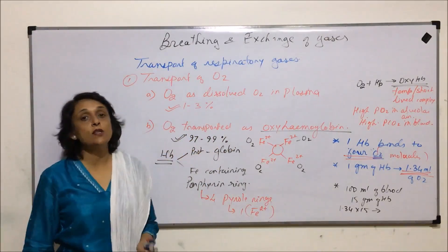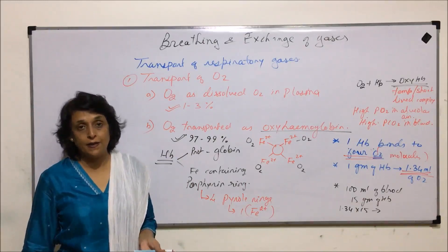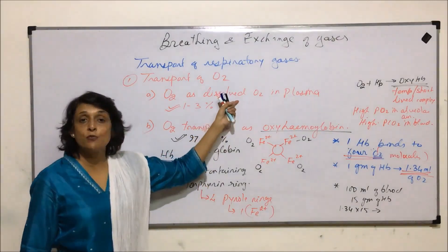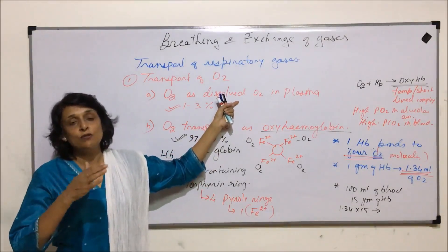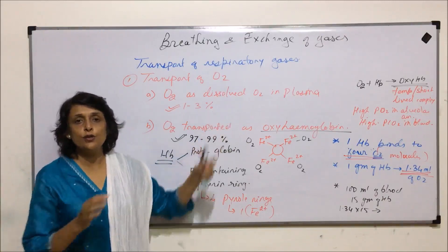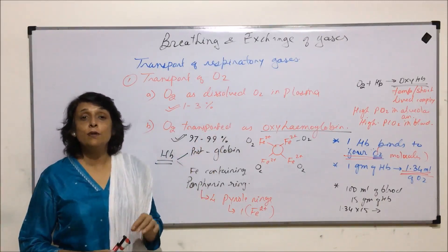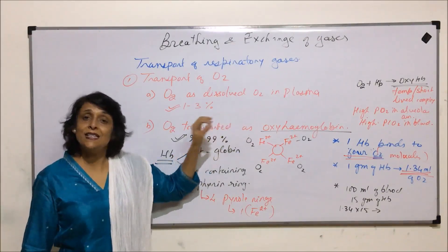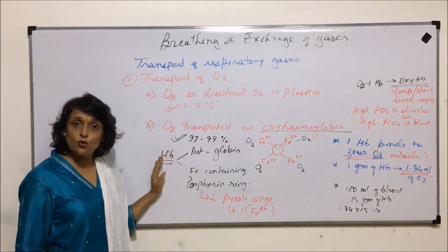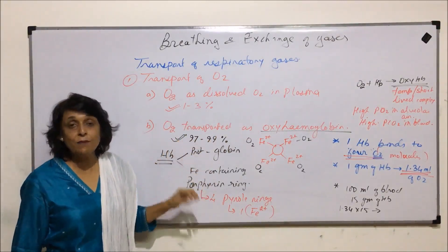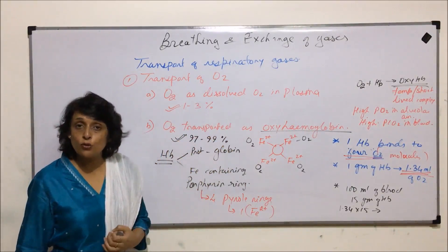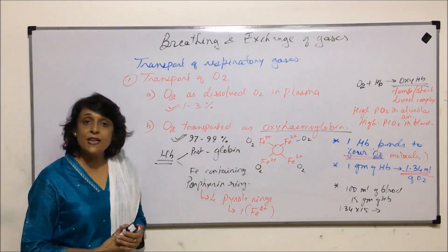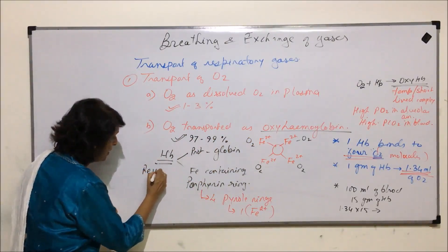This is seen in higher animals who have a high metabolic rate. Lower animals with less metabolic rate transport maximum oxygen dissolved in plasma, which is a slow process — but they can deal with it because their metabolic rate is very low. In higher animals like human beings, the metabolic rate is higher and oxygen demand is also more, so hemoglobin helps in transport. That is why hemoglobin is the respiratory pigment.